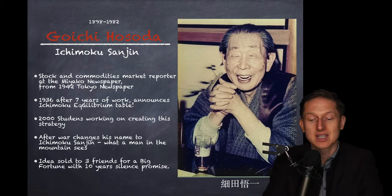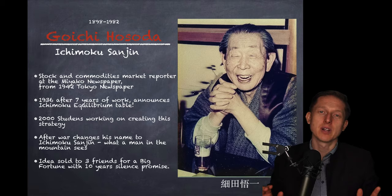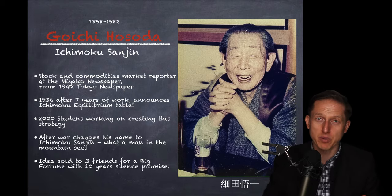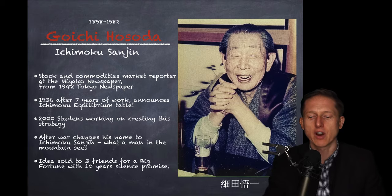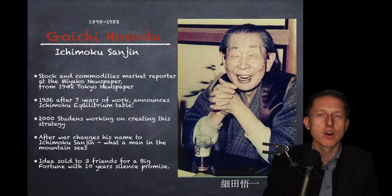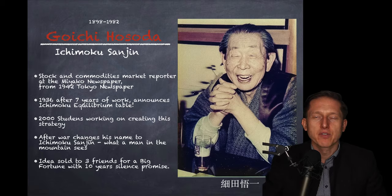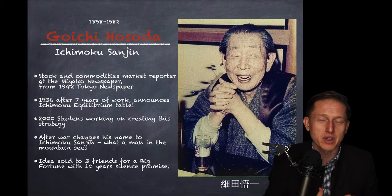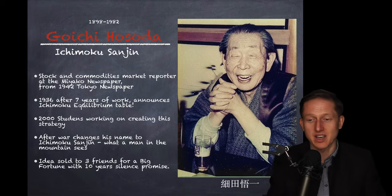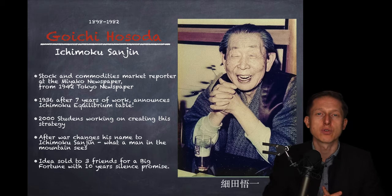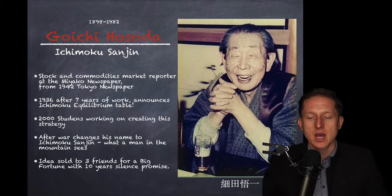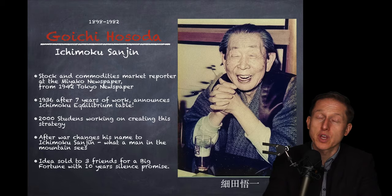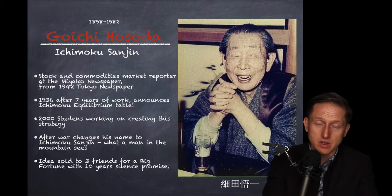His idea was sold to three friends for a big fortune with a ten-year silence promise. Three very wealthy, well-positioned people in Tokyo - his friends, as he called them in his book - convinced him to teach them this strategy. They signed a contract. He was paid so much that he would not release it to the public for ten years. He kept the promise - actually, he kept it for twenty years before he published the first volume.